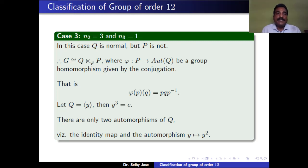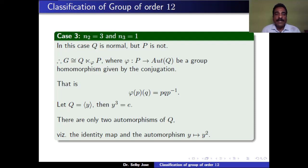Case 3: N2 = 3 and N3 = 1. G has a unique Sylow 3-subgroup Q and three Sylow 2-subgroups. Here Q is normal but P is not. Therefore G is isomorphic to the semidirect product Q ⋊ P under φ, where φ is a homomorphism from P to Aut(Q). If Q = ⟨Y⟩ with Y³ = e, there are only two automorphisms of Q: the identity map and the automorphism sending Y to Y².